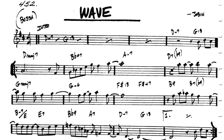Skipping ahead to bar 4, the D7 flat 9 is called a secondary dominant, which leads us into the IV major 7 chord in bar 5. The A minor 7 that precedes the D7 flat 9 is called a related 2 minor 7th chord. Remember, the 2 is only at the party because the V7 chord invited it.